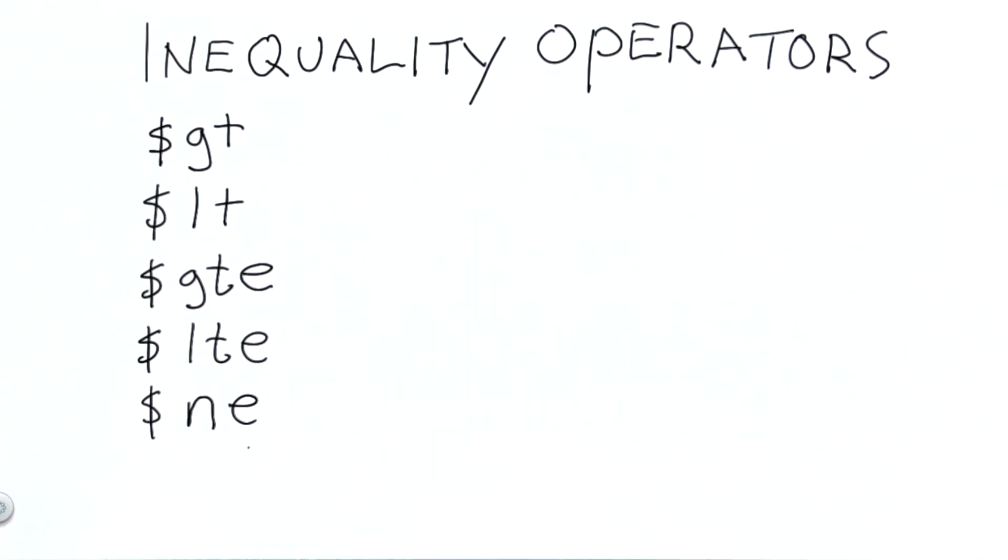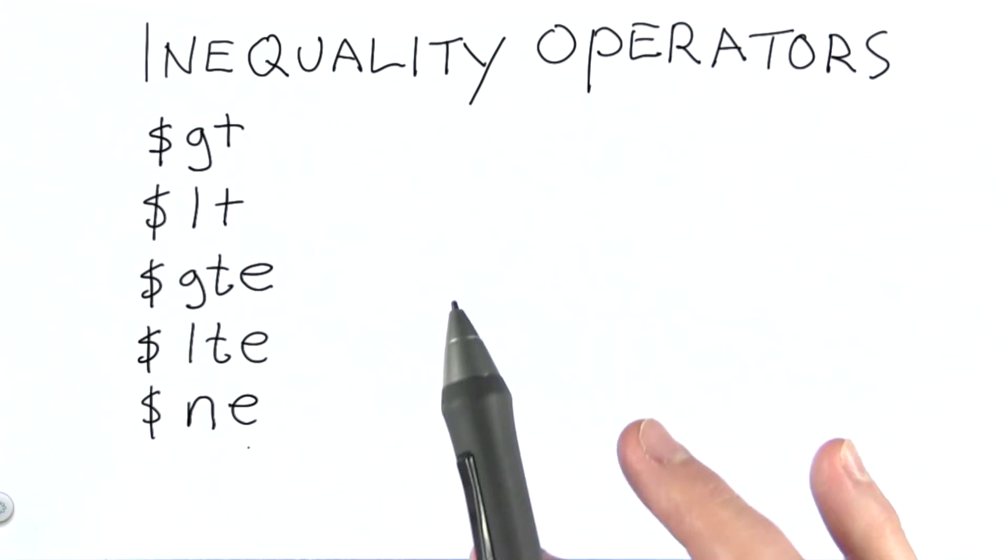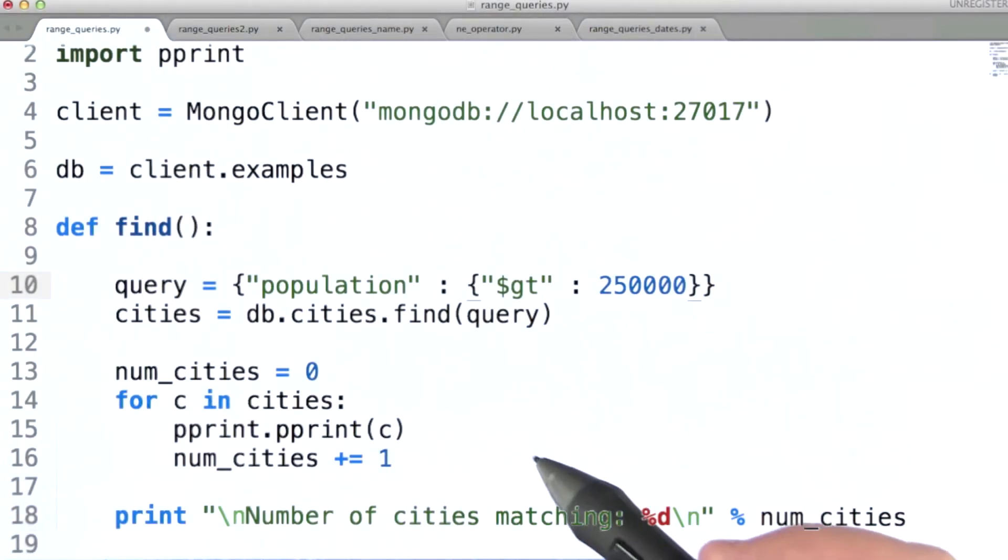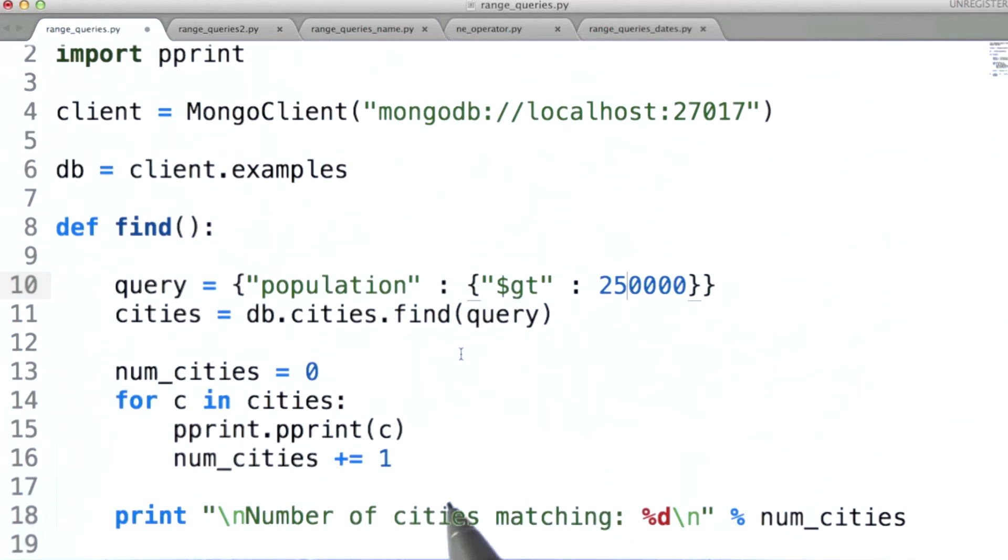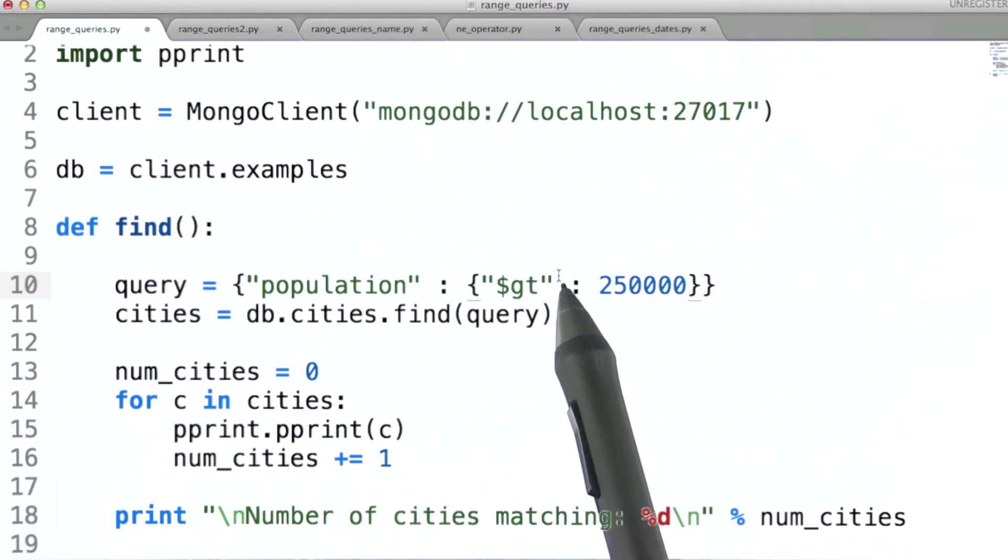Now let's look at some queries against our cities collection that provide examples of using inequality operators. So imagine that we want to query for all cities with a population greater than a quarter million. Instead of specifying an exact number as the value for our query document, we're instead going to use the greater than operator. The value of population in our query document is going to be a subdocument using that operator.